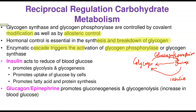Insulin acts to reduce blood glucose. It can do three things: number one, it can promote glycolysis — the breakdown of glucose to pyruvate — reducing blood glucose levels. Number two, it can lead to glycogenesis, the synthesis of glycogen, converting glucose to glycogen particularly in the muscle and in the liver.